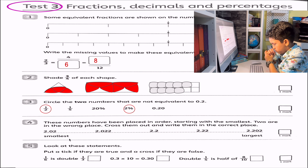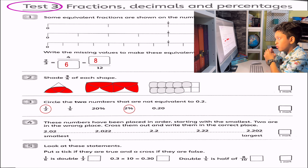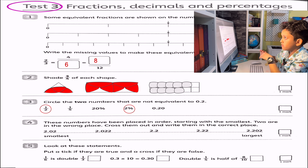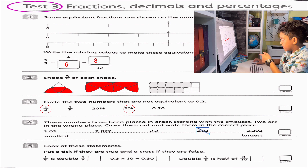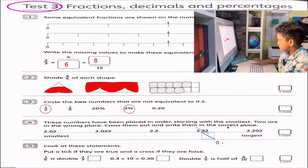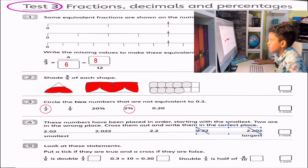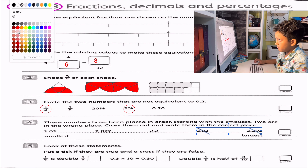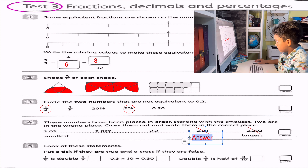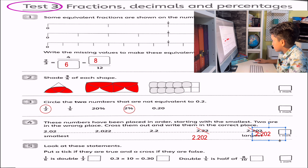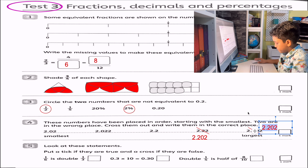Question 4: these numbers have been placed in order starting with the smallest. Two are in the wrong place, so we must cross them out and write them in the correct place. We cross out this one because it is bigger than the one after it. We found the second answer. Now we need to switch them around: this answer is 2.202 and this one is 2.22.